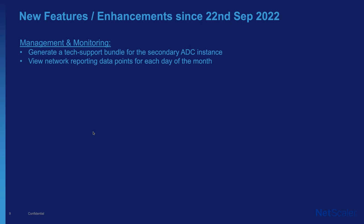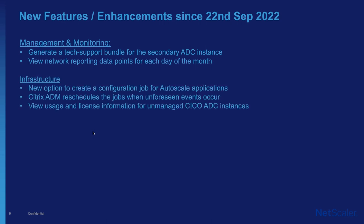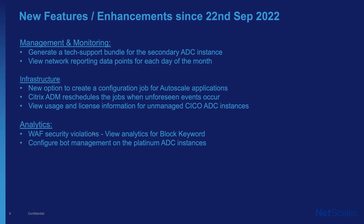Under infrastructure, there is now a new option to create configuration jobs for auto-scale applications. In Citrix ADM, you can now reschedule jobs if any unforeseen event occurs. The view and usage of license information for unmanaged check-in/check-out ADC instances has also been improved. In analytics, there are improvements around WAF security violations — you can now view analytics for block keywords and configure bot management on platinum ADC instances. And for style books, there is now support for Citrix ADC BLS instances.